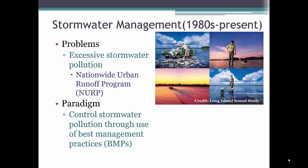The implementation of the Clean Water Act in 1972 addressed a major source of waterway pollution, namely urban wastewater. At that time, stormwater was still considered relatively clean and a negligible source of waterway pollution. However, in the late 1970s through the early 1980s, the EPA initiated the Nationwide Urban Runoff Program to evaluate pollutant discharges from urban stormwater. The results of the study showed that stormwater was really not so clean, with elevated levels of oils, heavy metals, fertilizer, bacteria, and other contaminants. This led to a new paradigm of stormwater management that focused on controlling stormwater pollutants through the use of best management practices, or BMPs.